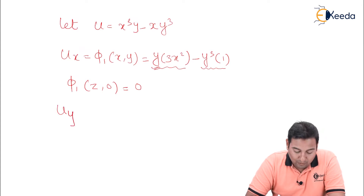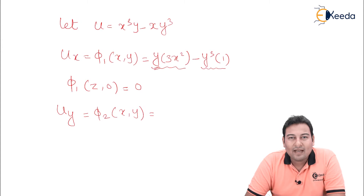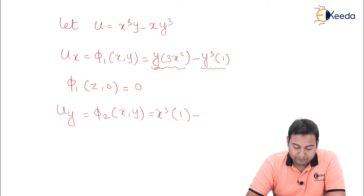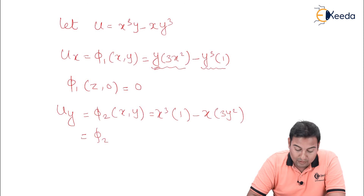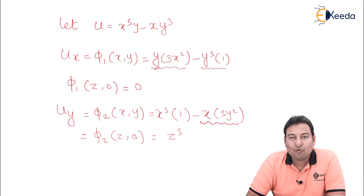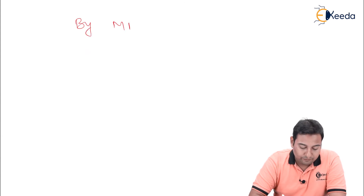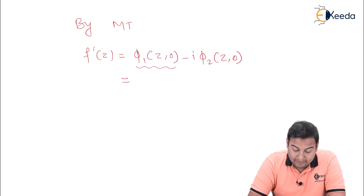Now let us find u_y and name it as phi 2 of x, y. Differentiating with respect to y, x is constant: x cube times y derivative is 1, minus x constant, y cube derivative is 3y square. Evaluating phi 2 at (z, 0): this will be z cube, and the second term becomes 0 because we put y as 0.